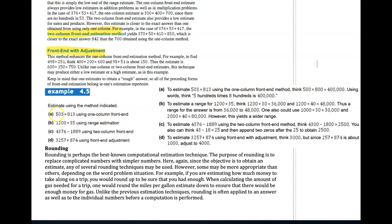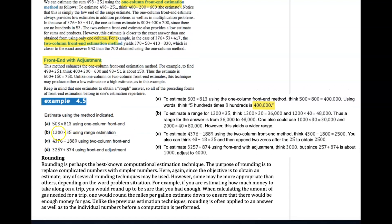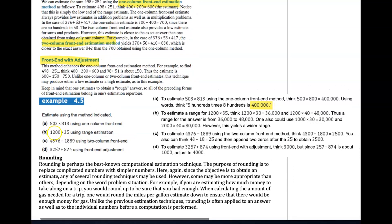503 times 813 - just use the one-column front-end, so just use the 5 and the 8 to produce your estimate, and there's your 400,000. Range estimation is what we did in the example above. Do the 12 times 3, you could do that, and then you can also do 12 times 4, 12 times 30, and 12 times 40 to get some estimate. You could use 13 times 30, 13 times 40 - there's so many different ways to think about getting your range estimate.